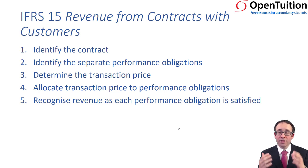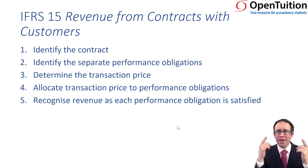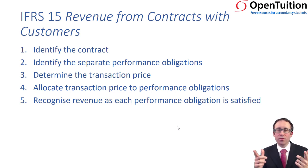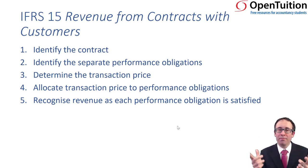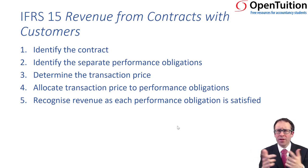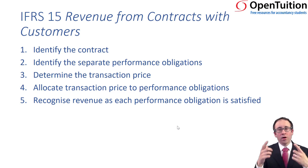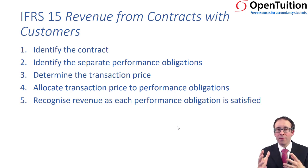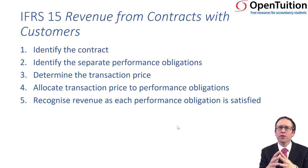First of all, you need to identify the contract. There's a sale between one company and the other — but is there a contract between the two? It doesn't have to be a legally written contract; it could be implied or agreed verbally, but there needs to be some form of agreement. Once we've identified the contract, that brings in IFRS 15, and then we need to look at the obligations that are there within the contract.